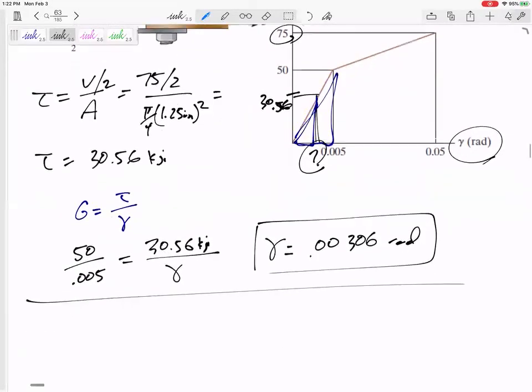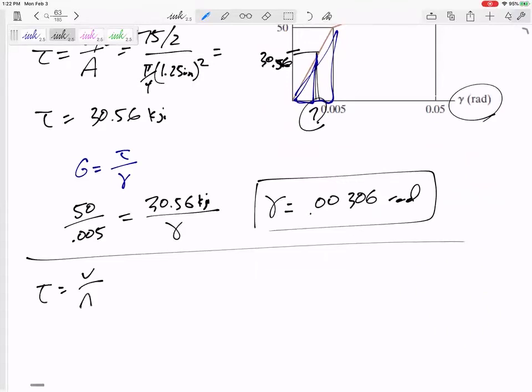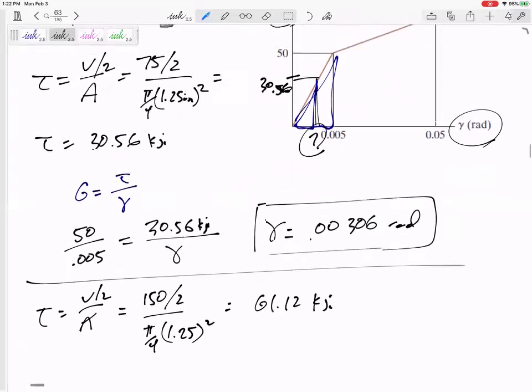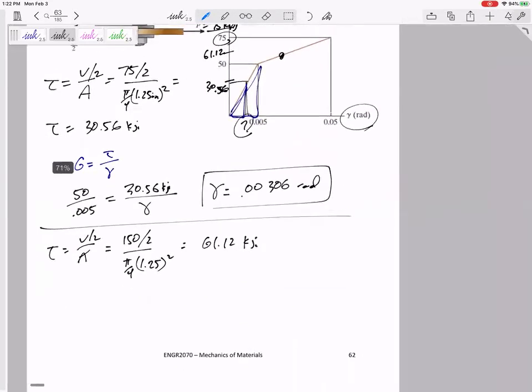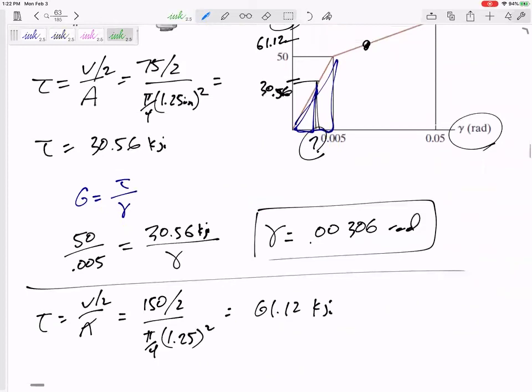If this was 150, τ equals V over A, but it's double shear, so 150 over 2, π/4 times 1.25 squared. This is 61.12 KSI. This is a little bit harder. The 61 would be up here in the yielding region. Before I start trying to unload it, first let me figure out where this point is. For a stress of 61.12, I could do some triangles or interpolation.